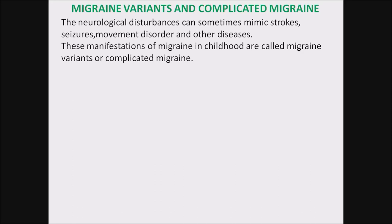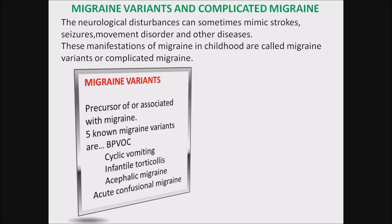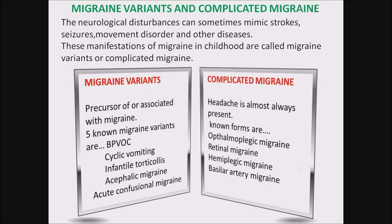Migraine variants and complicated migraine: neurological disturbances can sometimes mimic strokes, seizures, movement disorders, and other diseases. These manifestations of migraine in childhood are called migraine variants or complicated migraine. Known migraine variants include BPVOC, cyclic vomiting, infantile torticollis, acephalic migraine, and acute confusional migraine. In complicated migraine, headache is almost always present. Known forms include ophthalmoplegic migraine, retinal migraine, hemiplegic migraine, and basilar artery migraine. In complicated migraine patients, there are higher chances of developing strokes in the future.